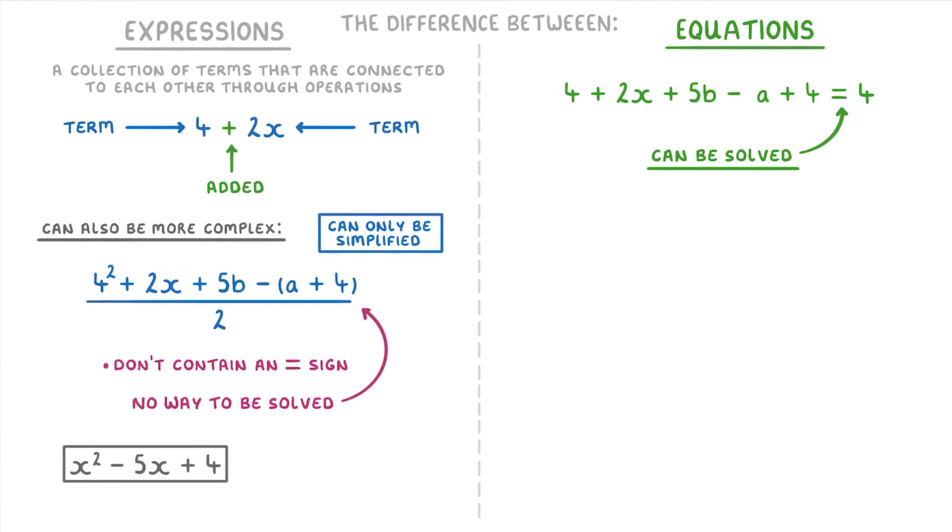Whereas if we were given x squared minus 5x plus 4 equals 0, that would be an equation and could be solved. Or as another example, 17x equals 34 counts as an equation because there's an equal sign, but 17x plus 34 is an expression.